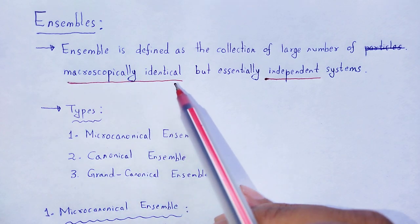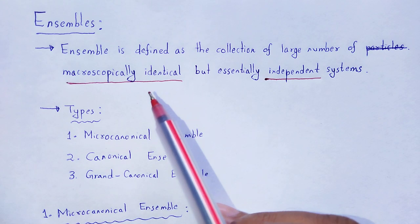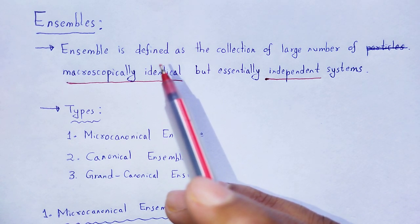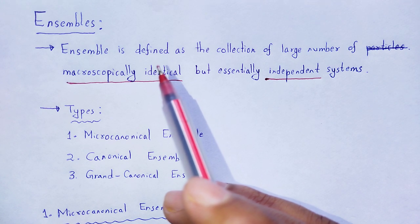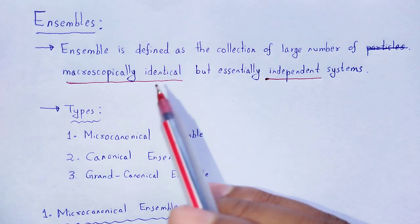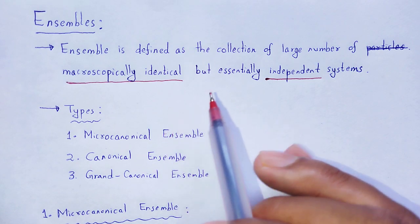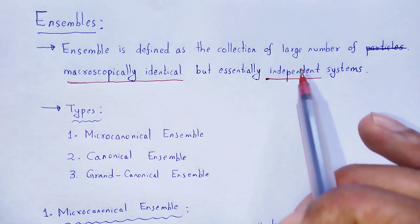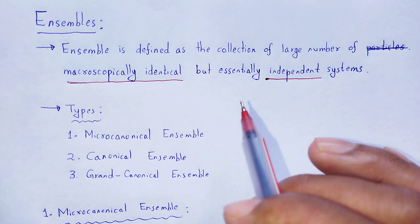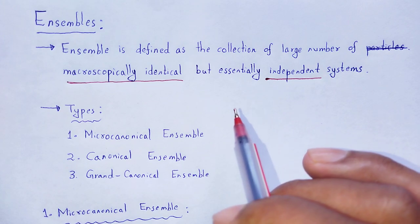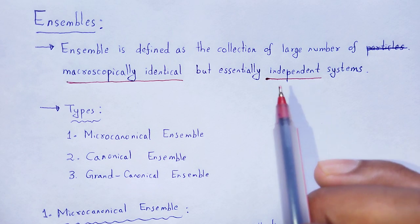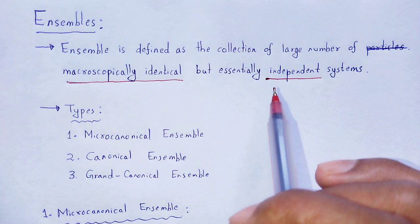What is macroscopically identical? Macroscopically identical means that each of the systems constituting an ensemble satisfies the same macroscopic conditions — macroscopic conditions like pressure, volume, energy and total number of particles. Independent systems means the systems forming the ensemble are non-interacting. So, ensemble is the collection of large number of systems, and these systems are macroscopically identical and independent with each other.